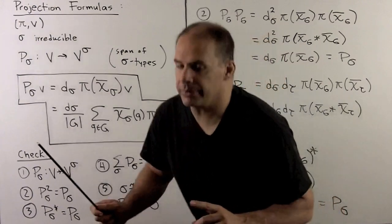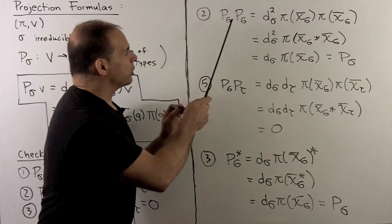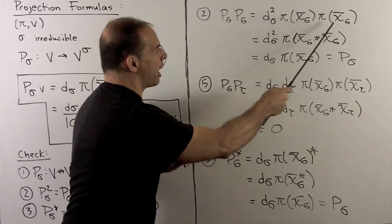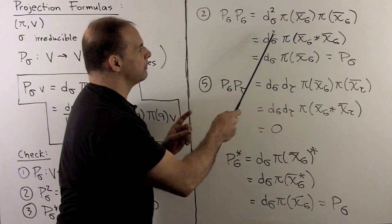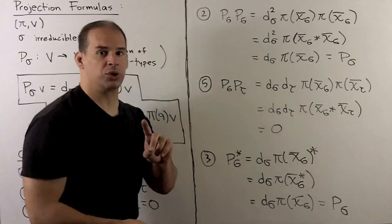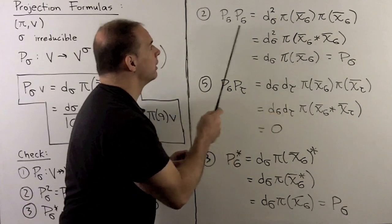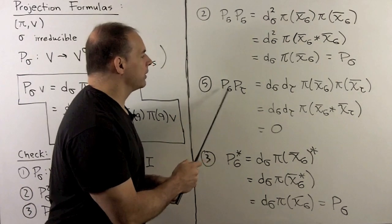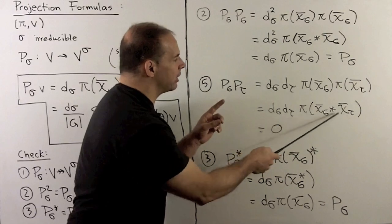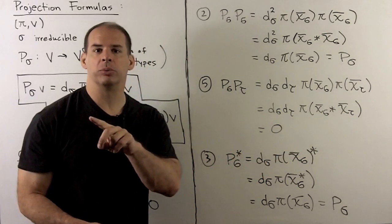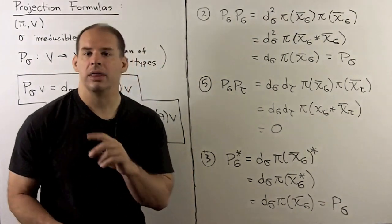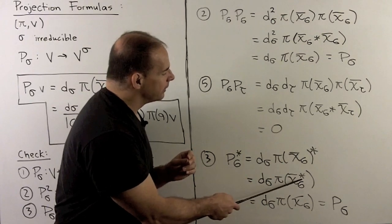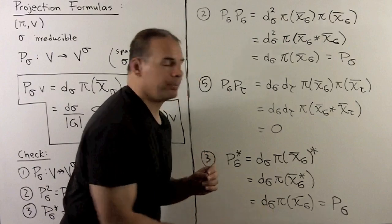First, we check that our operator squared is itself. Applying our rules, we can take convolution to a product and back. Our rule says: if we take the dimension and the convolution of a character with itself, we get that character back since it is irreducible. This is just our definition of P sub sigma. So P sub sigma squared is itself. Likewise, if we compose P sub sigma with P sub tau where sigma and tau are inequivalent, the convolution of two characters for inequivalent irreducibles gives zero. Then taking the adjoint of P sub sigma: from the previous board, that sends the star to the inside, and the star of a character is itself. So we get back P sub sigma.